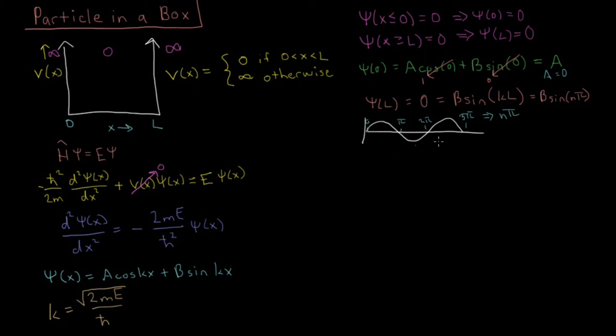So moving forward with that, we'll have KL equals n pi, and then solving for K, we'll just get K equals n pi over L.